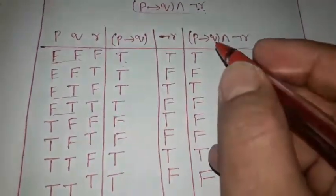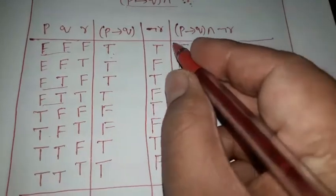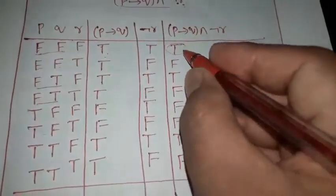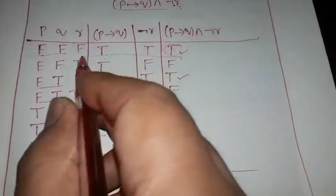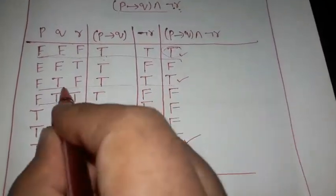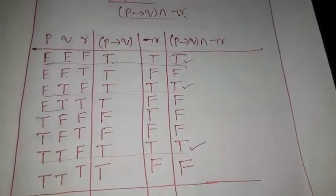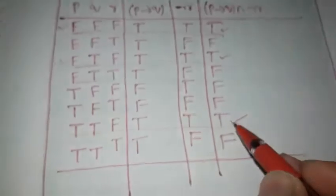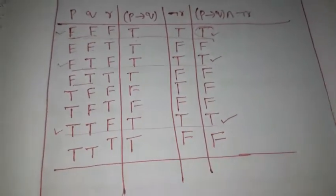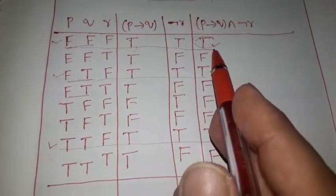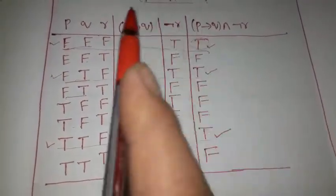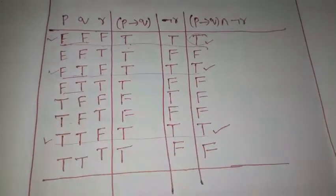The truth table is complete. Now identify the rows for which the value of the expression is true. The expression is true for three rows: row 1 (F,F,F), row 3 (F,T,F), and row 6 (T,T,F). We identify these rows and now write the min terms for these three rows.